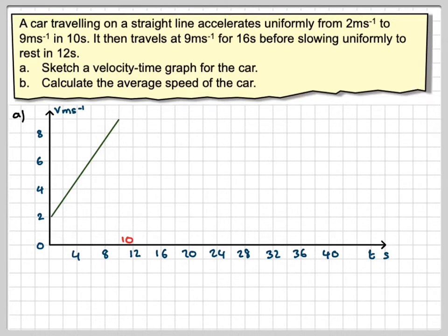It then travels at a constant speed for 16 seconds, so 10 plus 16 is 26. So we draw a horizontal straight line to 26.